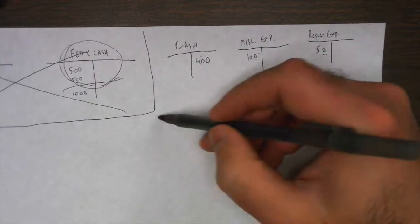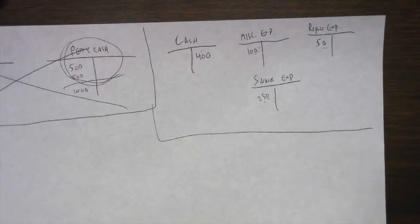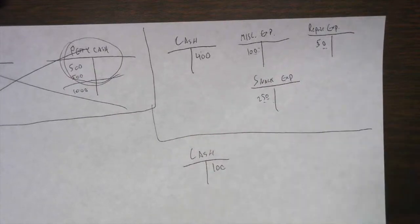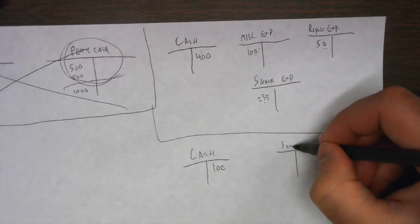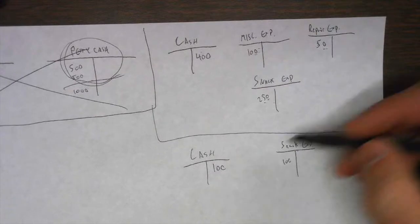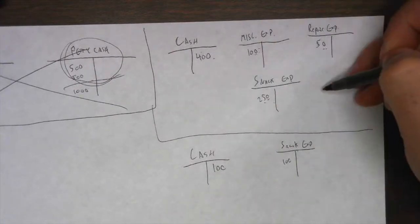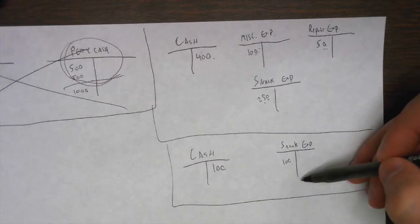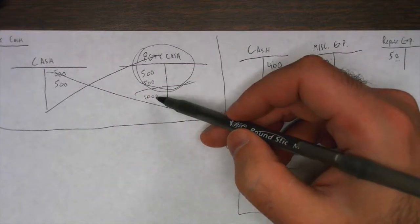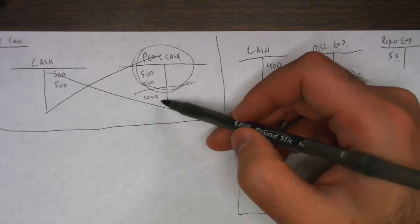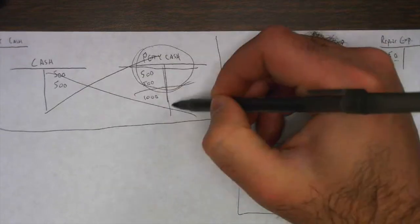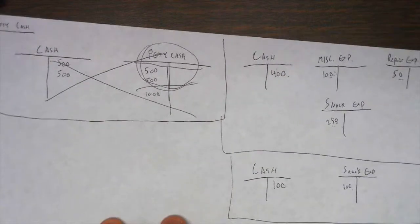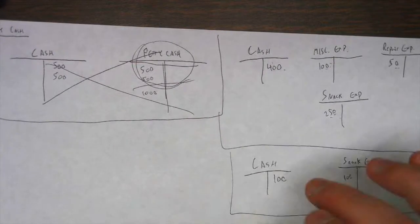If another month goes by and we only spent $100 out of it, we credit cash $100 to fill back up, and figure out where that hundred went — maybe it was all on snacks. The debit and credit match up. So to replenish petty cash, we just track where it was spent. We don't do anything else to petty cash unless we want the fund to be higher. If $500 isn't enough and we want to raise the limit to $1,000, that's the only time we do anything else to the petty cash account.